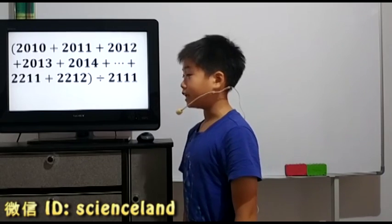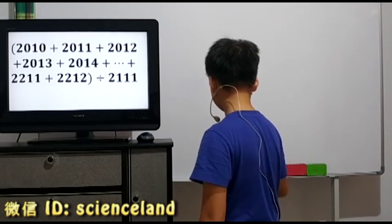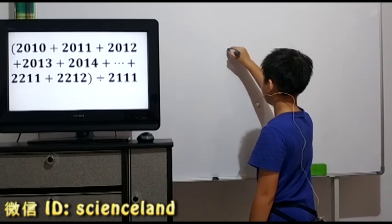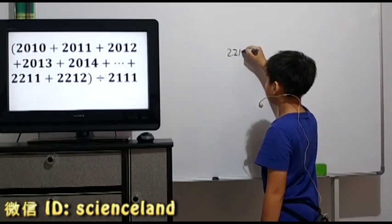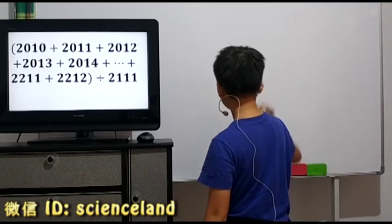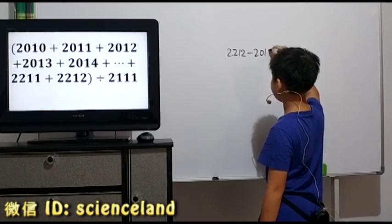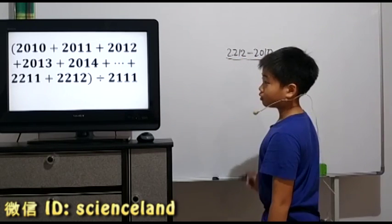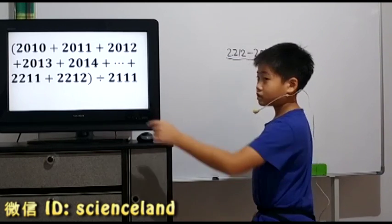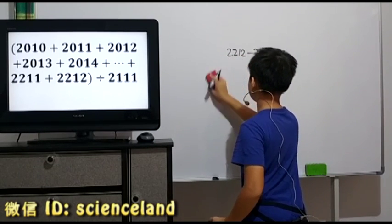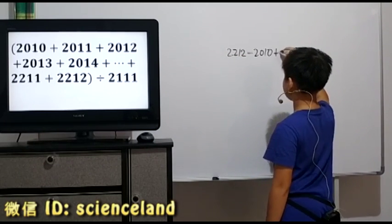Now we first find the number of numbers. The largest number is 2212. The smallest number is 2010. Over the common difference which is 1, so we don't need to write it. Plus 1.